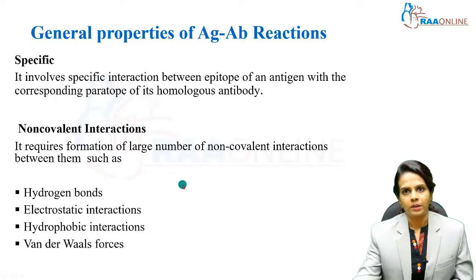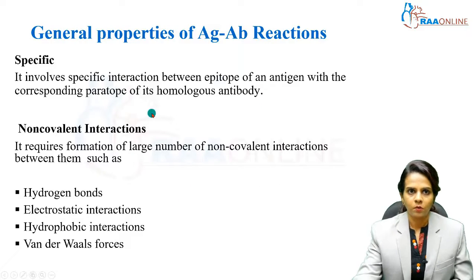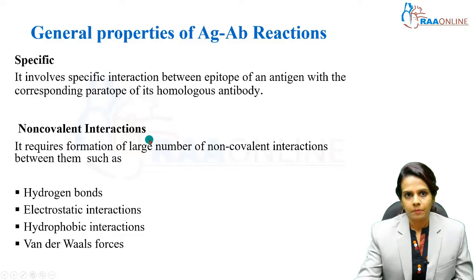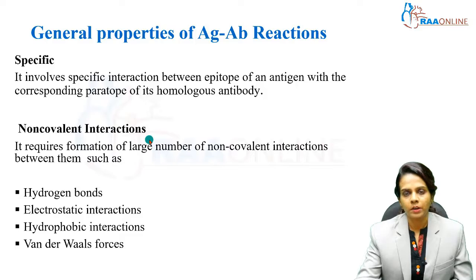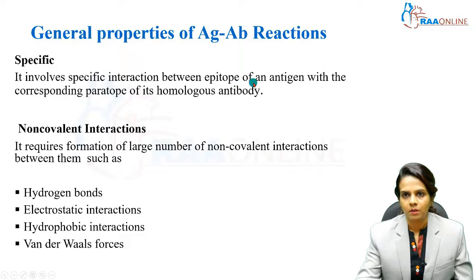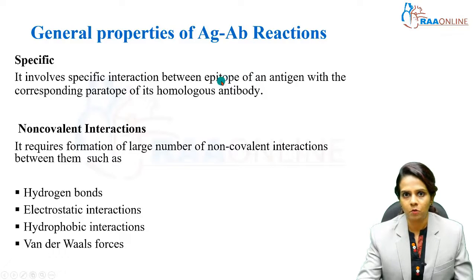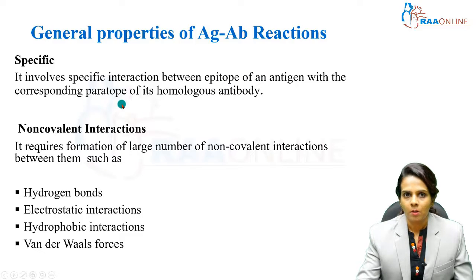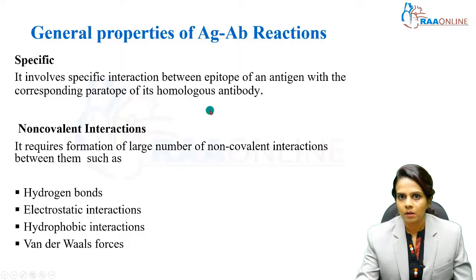What are the general properties of antigen-antibody reactions? First and foremost is specificity — antigen-antibody reactions involve specific interaction between the epitope of an antigen and the corresponding paratope of its homologous antibody. The epitope is the antigenic determinant; an antigen can contain many antigenic determinants, each called an epitope. This combines with the corresponding paratope, which is present on the antibody.